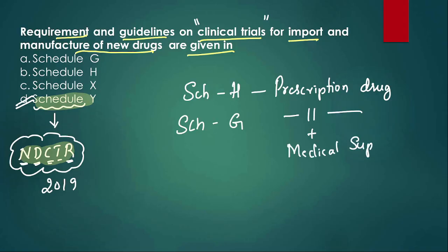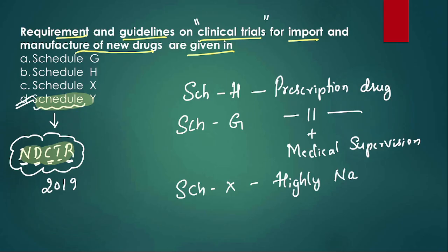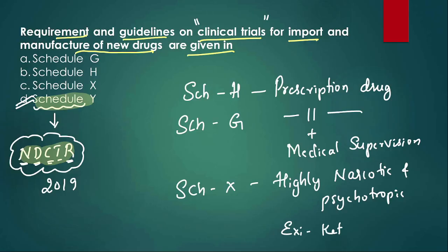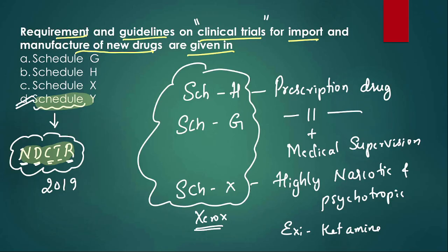Schedule G means prescription is required plus the drug is given under medical supervision — the doctor supervises when the drug is given. Schedule X covers highly narcotic and psychotropic drugs, such as ketamine and amphetamine. When prescribing Schedule X drugs, you must give a duplicate prescription. These are the three important schedules to know. For this question, clinical trial guidelines are given in Schedule Y.